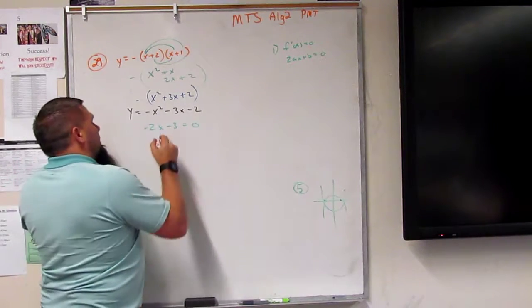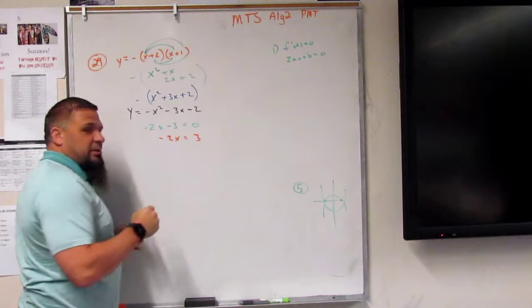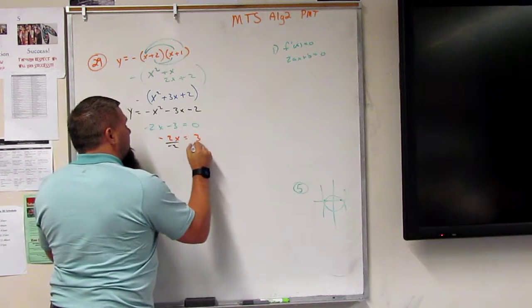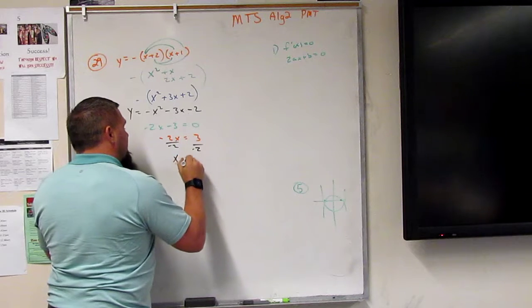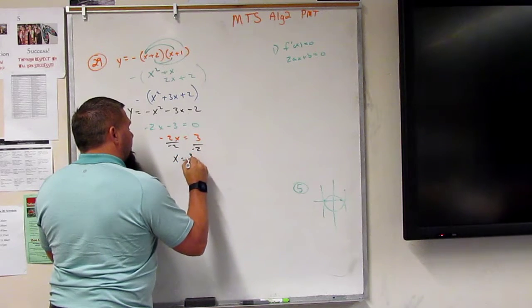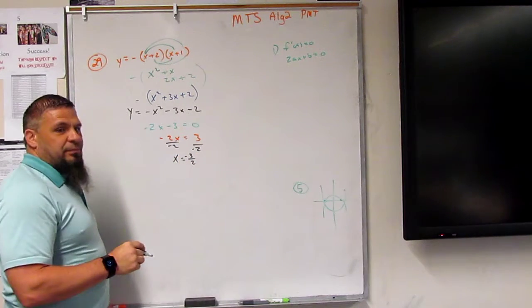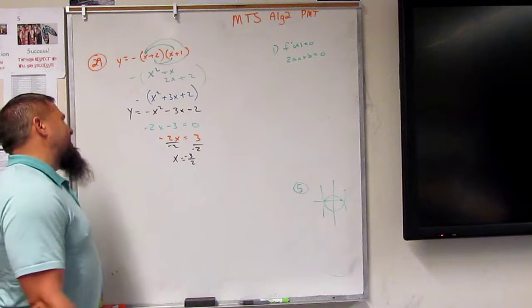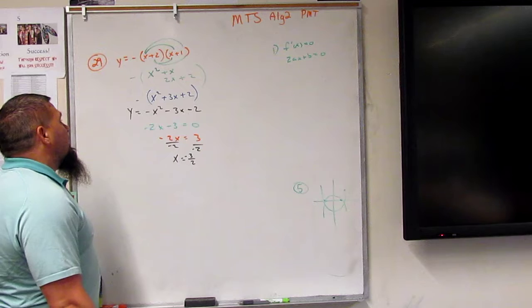So then negative 2x equals 3. And then divide by negative 2, and I get x is equal to negative 3 over 2. Axis of symmetry is not pretty, but it's like negative 1 and a half.